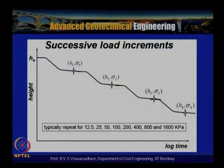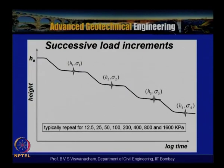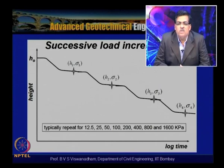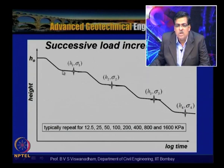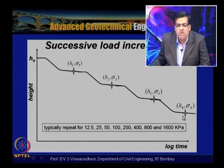This slide shows successive load increments of height versus log time. Typical pressures are: 12.5, 25, 50, 100, 200, 400, 800, 1600 kPa — always doubling. With each increment, the sample undergoes consolidation and reaches a new thickness and new effective stress. The reduction in thickness occurs because only water is expelled from the three-phase soil system while the solids remain the same.